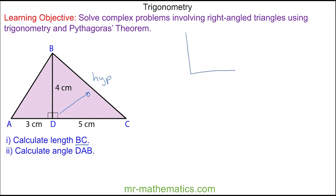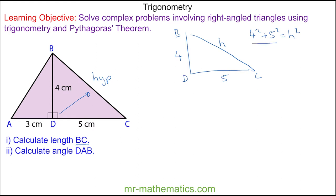So we're going to use Pythagoras' theorem, where this length is 4 (b to d) and the base length is 5. Pythagoras' theorem tells us that 4 squared plus 5 squared will equal the hypotenuse squared. 4 squared plus 5 squared is 41, which is the square of the hypotenuse.